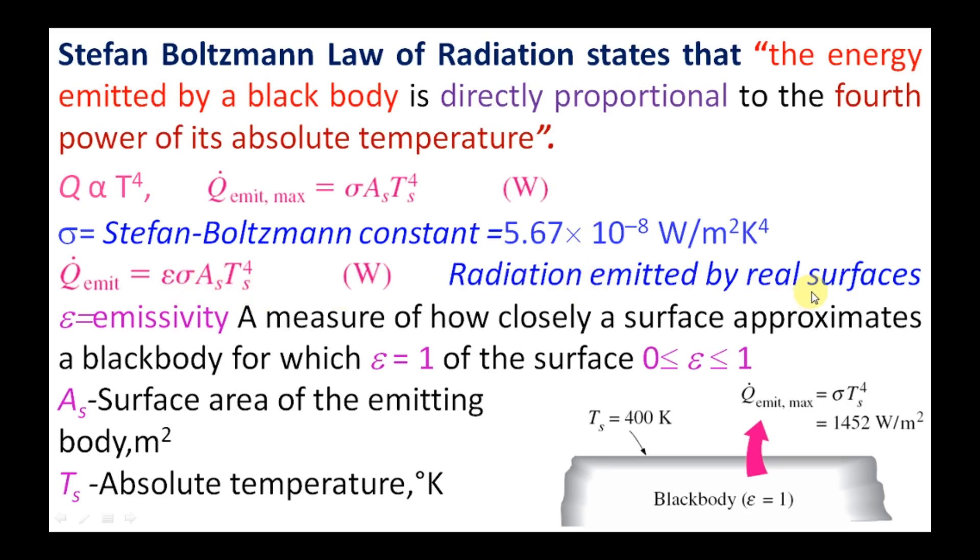Real surfaces are different than black surfaces because the black surface is the perfect emitter and the perfect absorber. 100% heat it will emit whatever the heat energy contained in it, and if it is absorbing, 100% it will absorb. But other real surfaces will not have 100% emitting taking place.